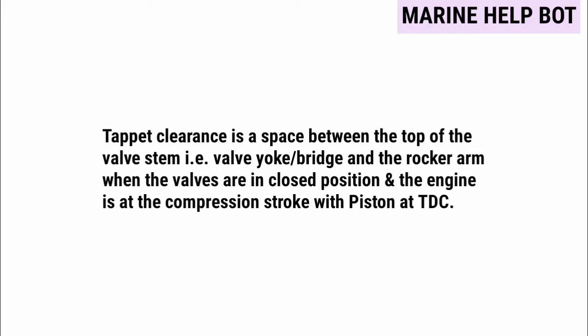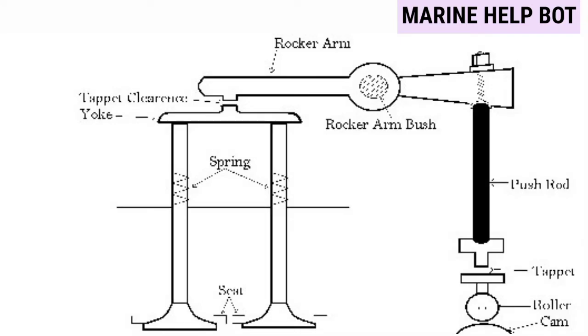Moving towards the first question: what is tappet clearance? This question was asked to me in the orals. Tappet clearance is the space between the top of the valve stem and the rocker arm when the valves are in closed position and the engine is at compression stroke with piston at TDC. In a four-stroke engine, the valve bridge is also called a yoke — both terms refer to the same thing but are used by different manufacturers.